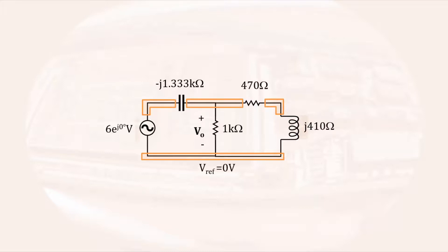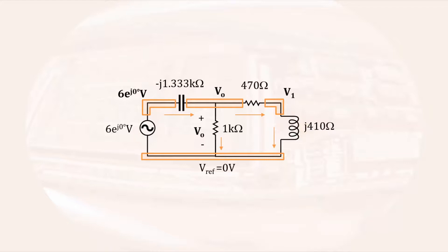I'm going to select the bottom node for the reference node and define it as 0 volts. This makes the upper left-hand node equal to the value of the voltage source. The middle node will be the phasor voltage that we are trying to determine. And just to assign the remaining node a voltage, I will call it V1. Having identified the nodes in the circuit, I'm then going to define the currents through each of the passive elements. For no particular reason, I will define the horizontal currents as going left to right and the vertical currents as going top to bottom.